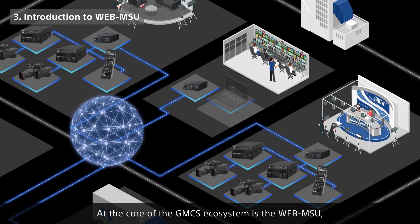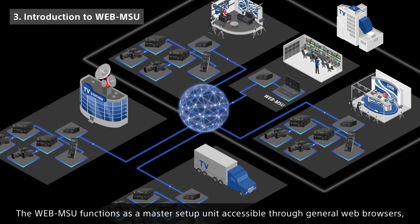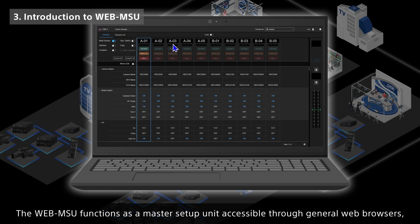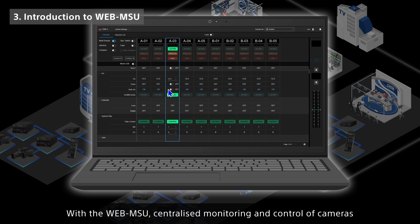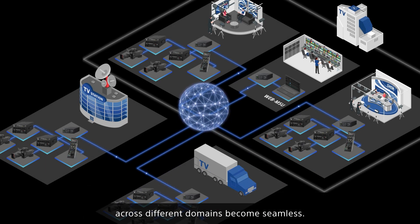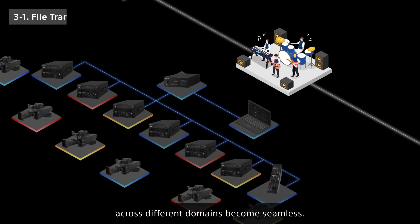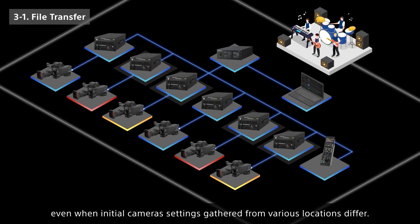At the core of the GMC-S ecosystem is the WebMSU, a powerful tool that significantly enhances production efficiency. The WebMSU functions as a master setup unit accessible through general web browsers, eliminating the need for dedicated software. With the WebMSU, centralized monitoring and control of cameras across different domains become seamless. Its file transfer feature allows for bulk configuration, even when the initial camera settings gathered from various locations differ.